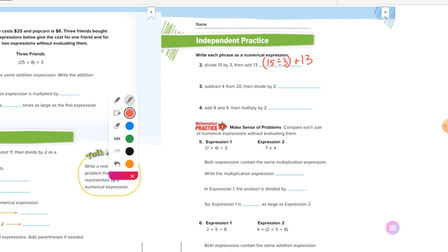Waylon, number three. Subtract four from 20, then divide by two. Hold on, what's divide by mean? I think that's a divide by sign. You can't read your own writing? Divided by two. Okay.